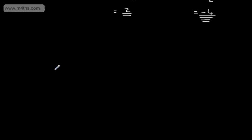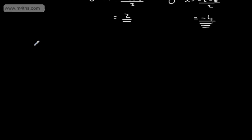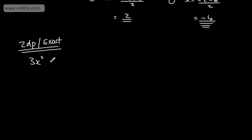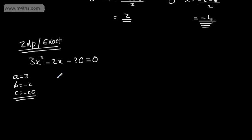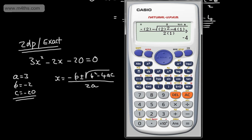Let's do a couple more examples, giving answers to two decimal places and also as exact answers. Let's take the equation 3x squared minus 2x minus 20 equals 0. It's in the correct form ax squared plus bx plus c equals 0, so a equals positive 3, b equals negative 2, and c equals negative 20. We can write x equals minus b plus or minus the square root of b squared minus 4ac, all over 2a, and plug this into the calculator to find the two possible roots.